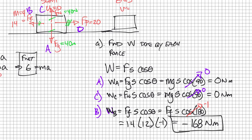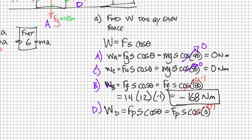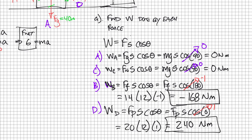Lastly, the work done by the pull force: work equals force of pull times S times cosine of zero degrees, which equals one. So the numbers are 20 times 12 times 1, which gives 240 newton meters. That's the work done by each of those four forces.